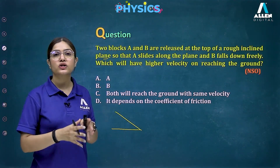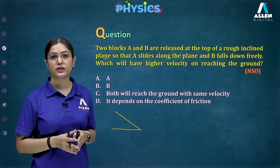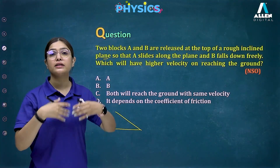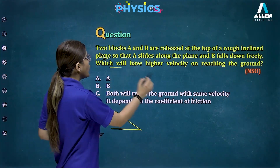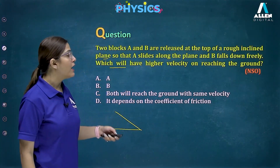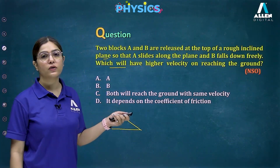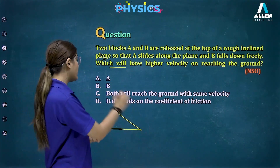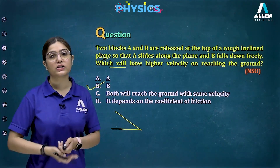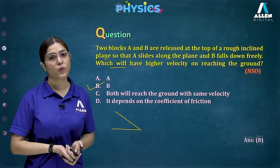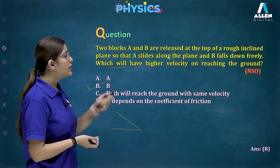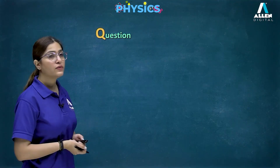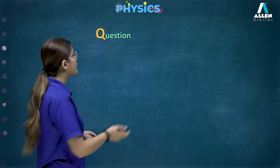For block A sliding along the inclined plane, friction acts opposite to its motion, reducing acceleration. For block B falling freely, no friction acts and it accelerates due to gravity. Therefore, block B will have higher velocity on reaching the ground. The correct answer is option B.